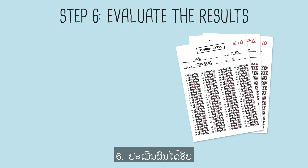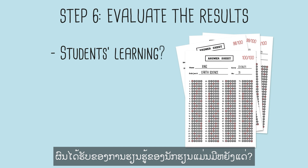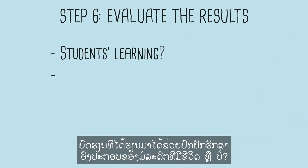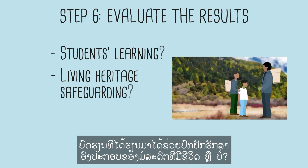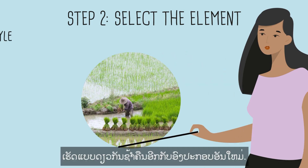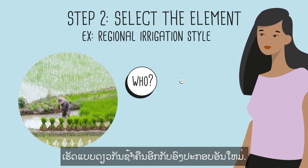Step 6: Evaluate the results. What are the students' learning outcomes? Step 7: Has the lesson helped safeguard the living heritage element? Repeat the process with a new element.